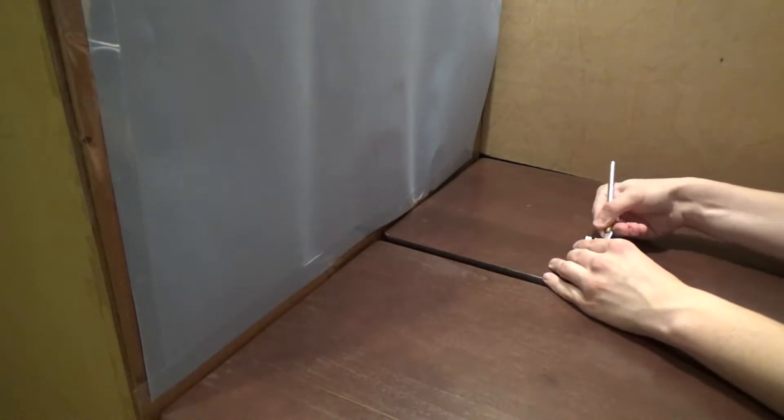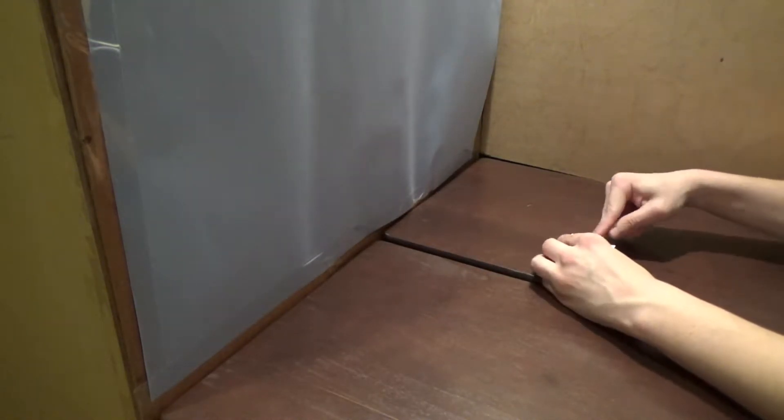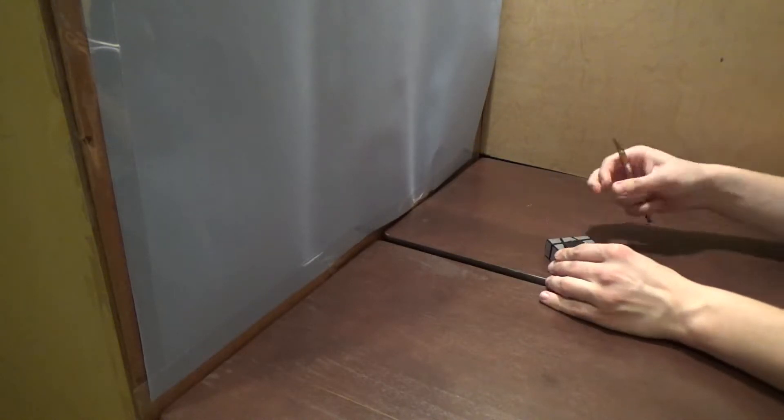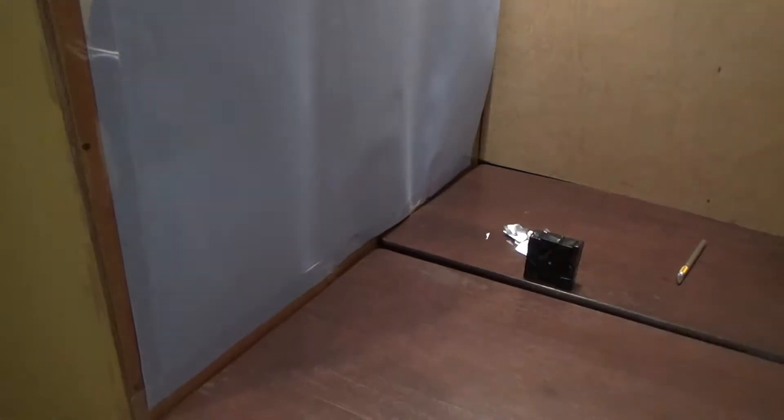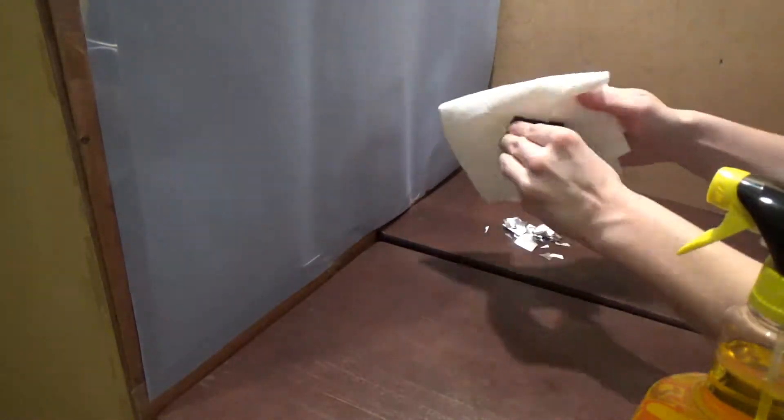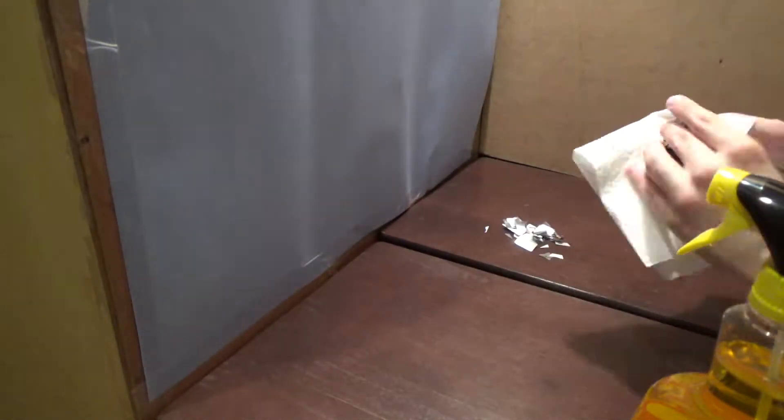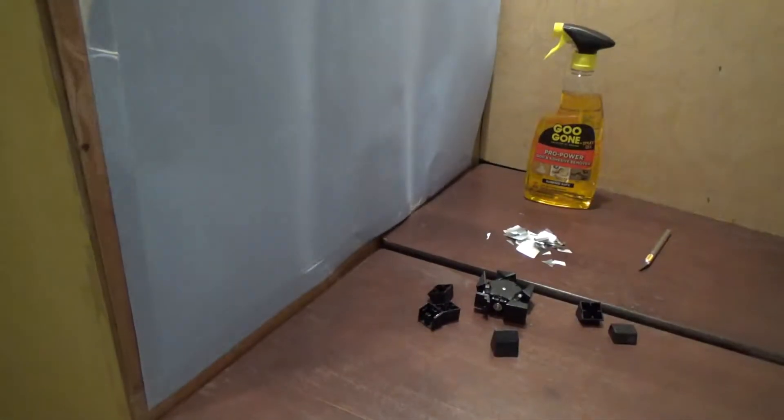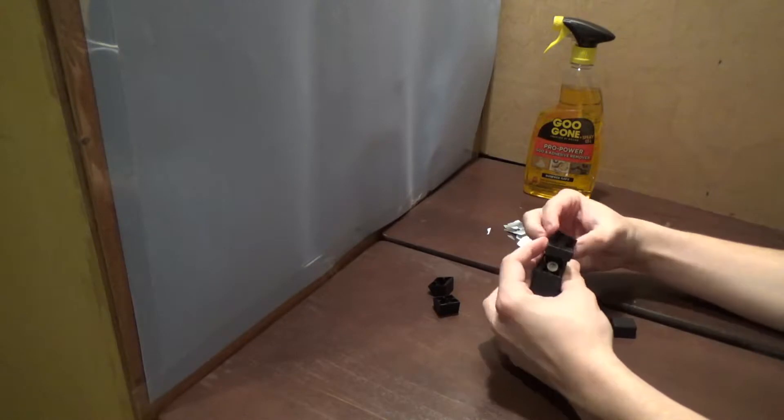I started by removing all the stickers from the ghost pentagonal prism. The glue was surprisingly strong and left a lot of residue on the puzzle. To get rid of the residue, I sprayed a bit of Goo Gone onto a paper towel and rubbed the residue off of each piece. I then washed all the pieces and put the edge caps back onto the puzzle.